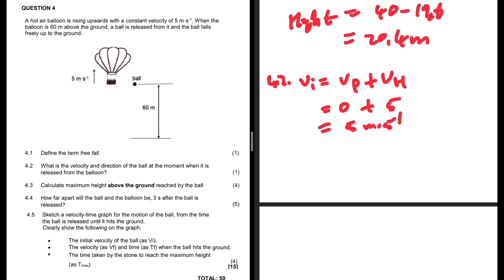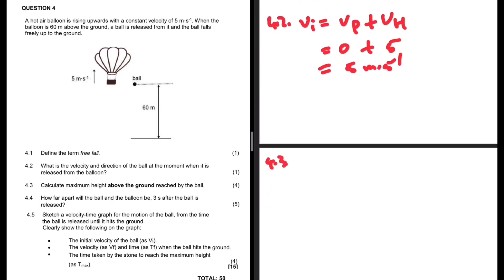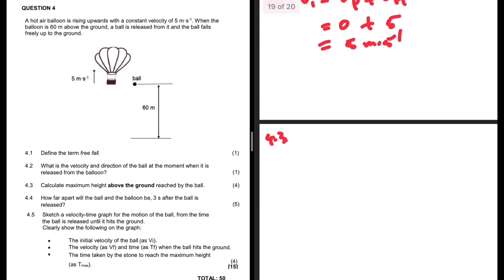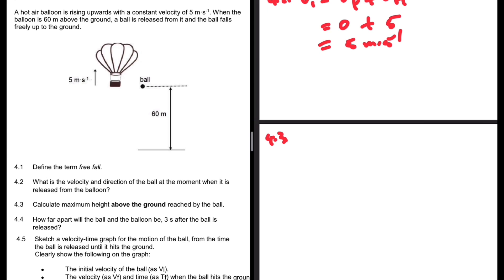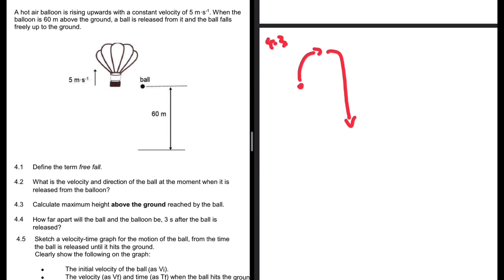Calculate the maximum height above the ground reached by the ball. It has an initial velocity of 5 meters per second, so it will go up first, reach maximum height, and then start going down. We have the initial velocity, the final velocity which is zero at maximum height, and we're looking for delta y.